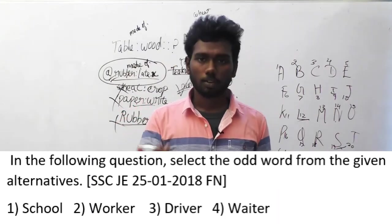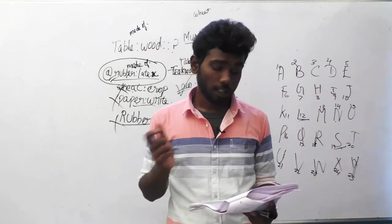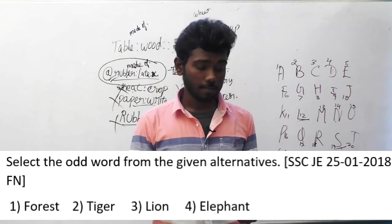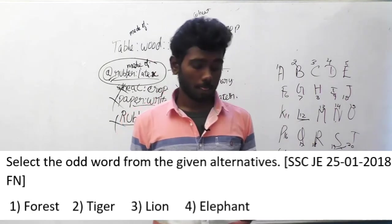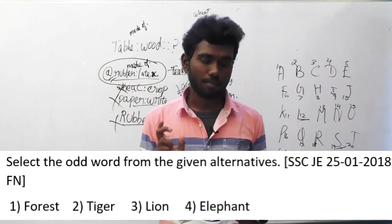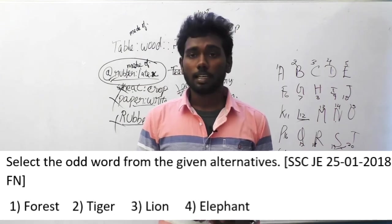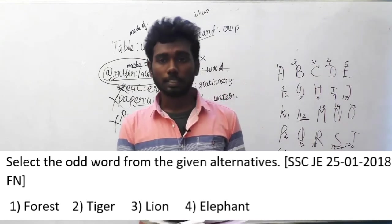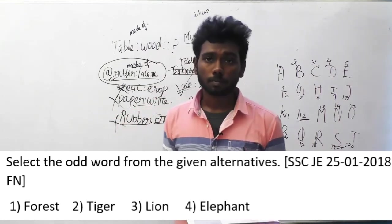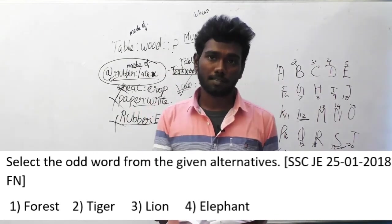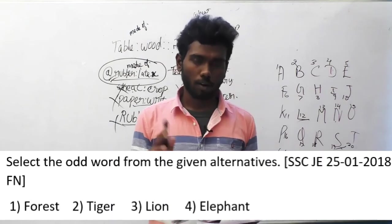Let us move on to question number 131 (139). In the following question, select the odd word from the given alternatives. Options are: option 1 forest, option 2 tiger, option 3 lion, option 4 elephant. Tiger, lion, and elephant are animals which live in the forest. In the first option, it is the forest itself. So forest is the odd one out — option A, forest, is the answer.